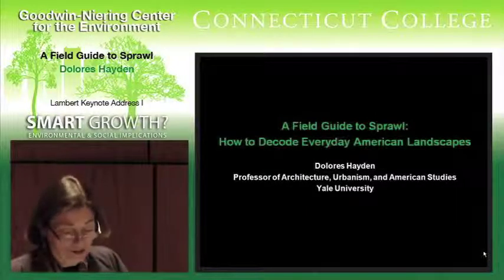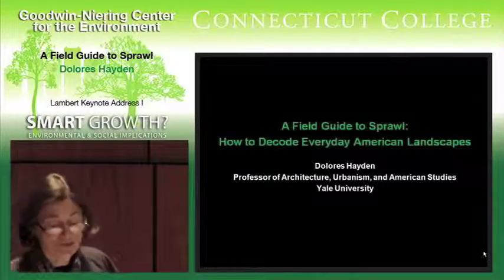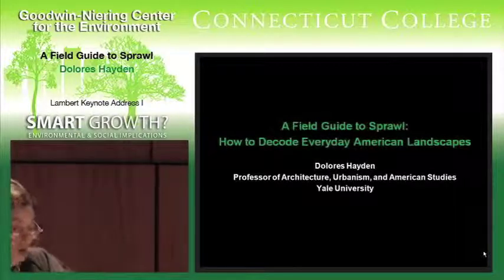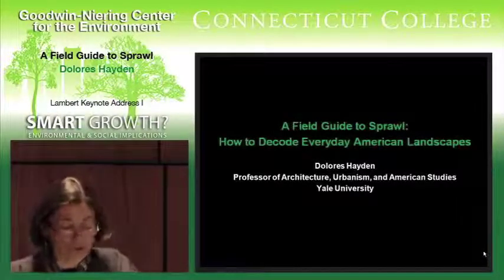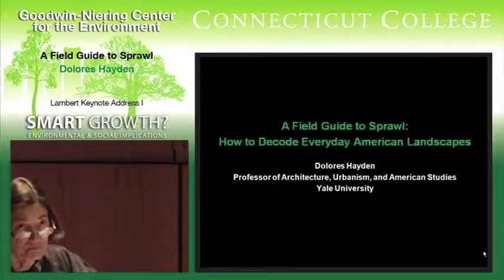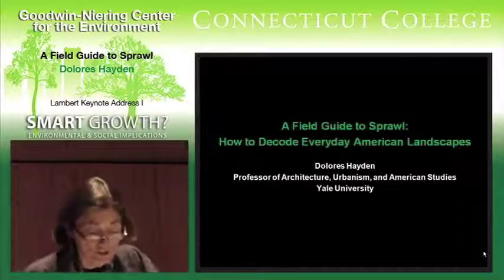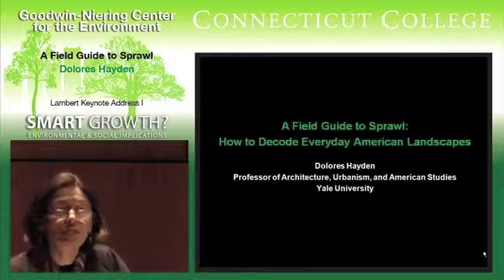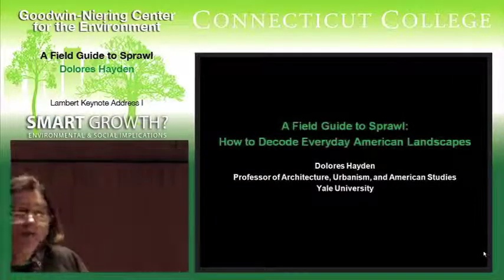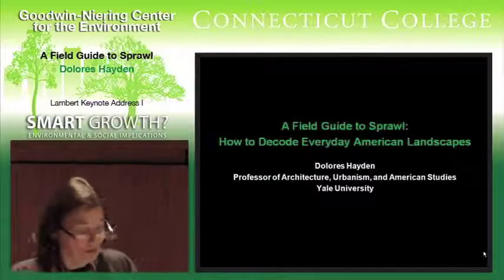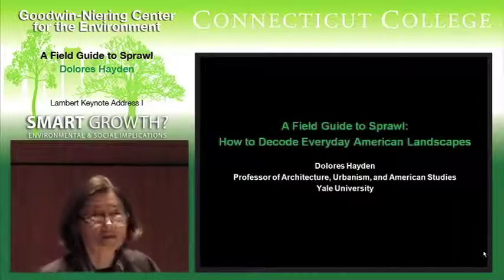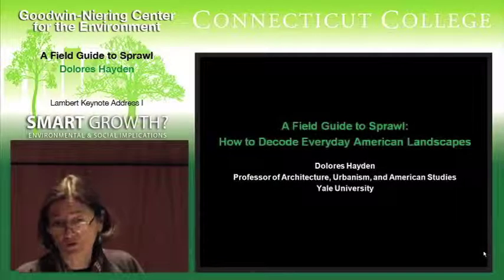Most Americans inhabit complex metropolitan landscapes layered with suburban tracts, strips, malls, office parks, and highways. Few of us can decode their physical forms or explain their economic origins. We might use the words city, suburb, and countryside, but many metropolitan landscapes defy these older definitions.